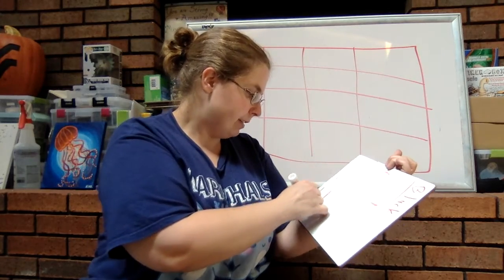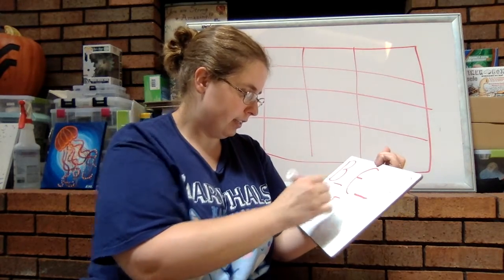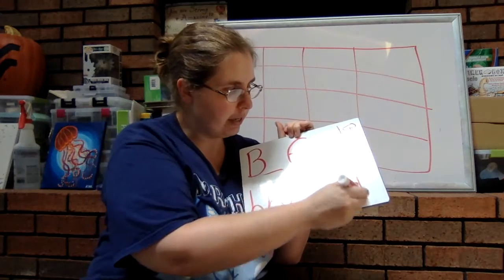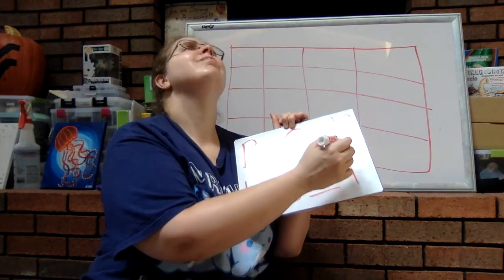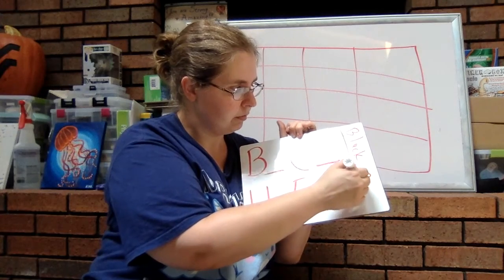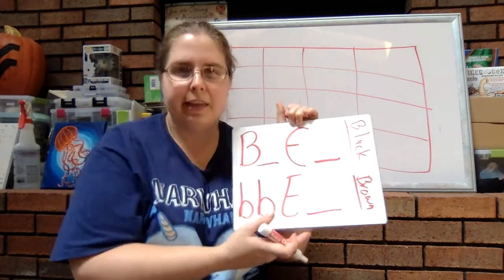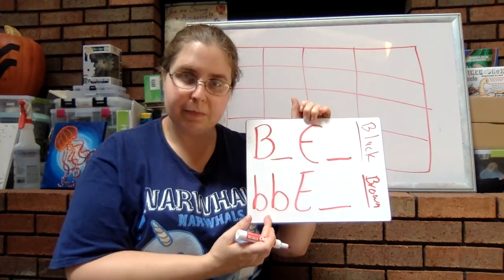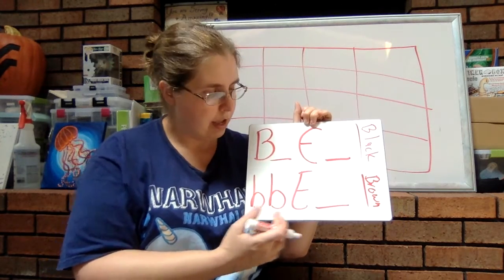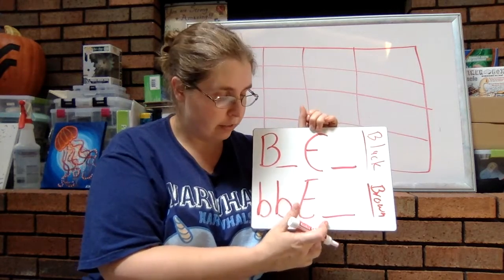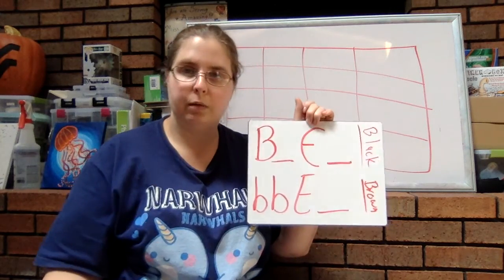If you are recessive for the first trait, but dominant for the second one, this is how you get brown labs. And what we mean by that is you are making the recessive pigments, the brown pigments, but you're still able to deposit them into the skin. So you're going to see them and you end up with brown fur.